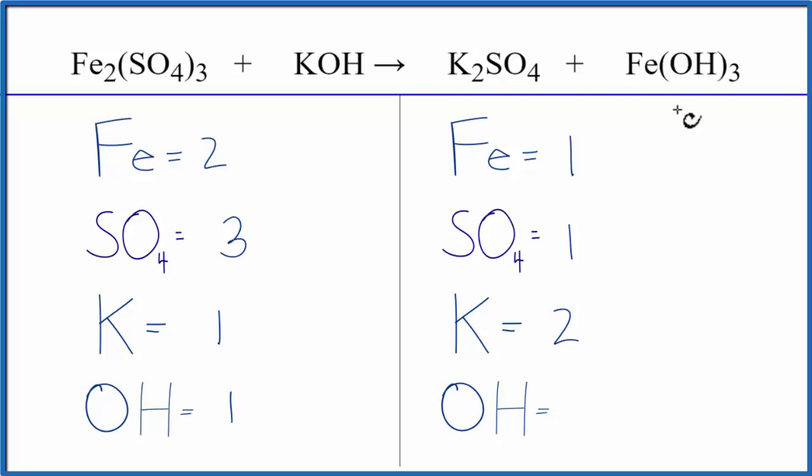Let's fix the irons first. I have two here and one here, so let's put a coefficient of two. One times two, so the irons are balanced. Then the two applies to everything, so I have three hydroxides times two, that gives me six hydroxides.